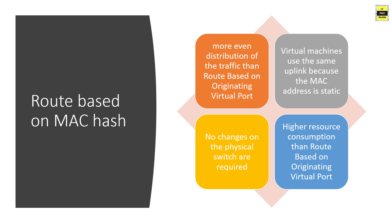The next option is route based on source MAC hash. This method provides a more balanced approach than originating virtual port ID. Each virtual machine always uses a single link and load is not distributed per-flow. This method has low CPU overhead and does not require any physical switch configuration.